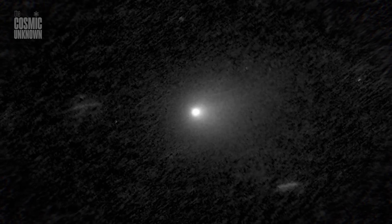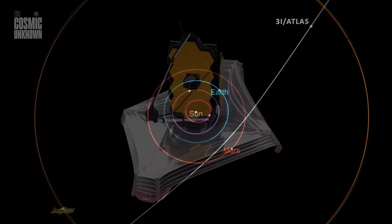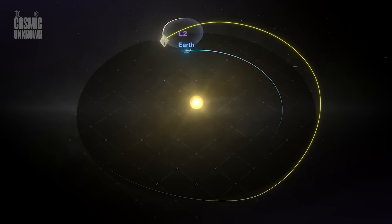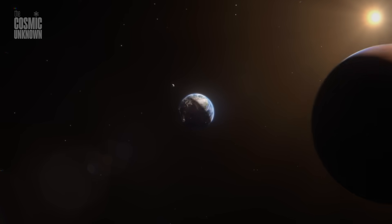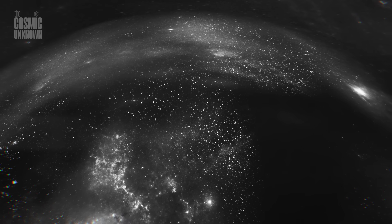It's not just large. It's also unusually aligned. Most interstellar objects arrive at steep angles relative to the ecliptic. 3I Atlas? Just 5 degrees off plane, almost as if it entered through the same corridor we used to launch probes.